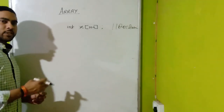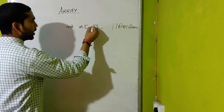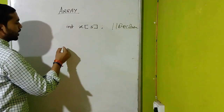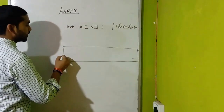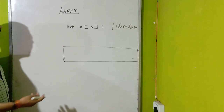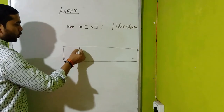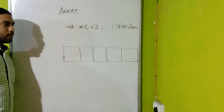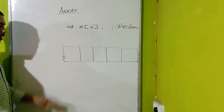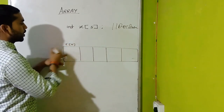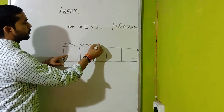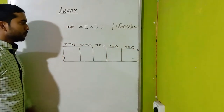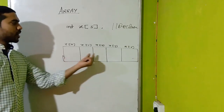Easy explanation ke liye, hum iska size chhota kar dete hain — maan lijiye hum isko 5 ke size ka le lete hain, yaani humne 5 variables bana rakhe hain, integer type ke. To memory mein ye kaise organize hoga? Agar integer ka size 2 byte hai, to 2-2 byte ke 5 blocks ban jayenge. Pehle block ka naam hoga x[0], phir x[1], x[2], x[3], aur x[4].